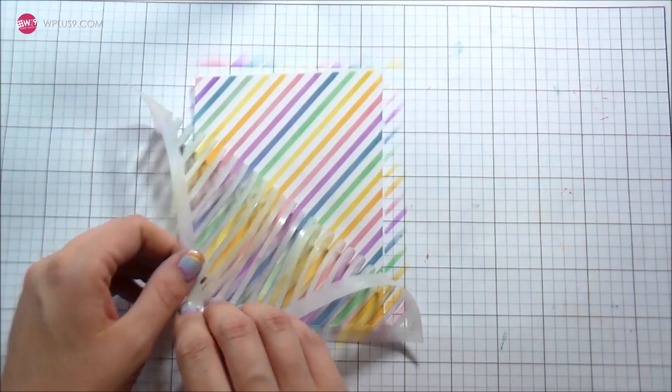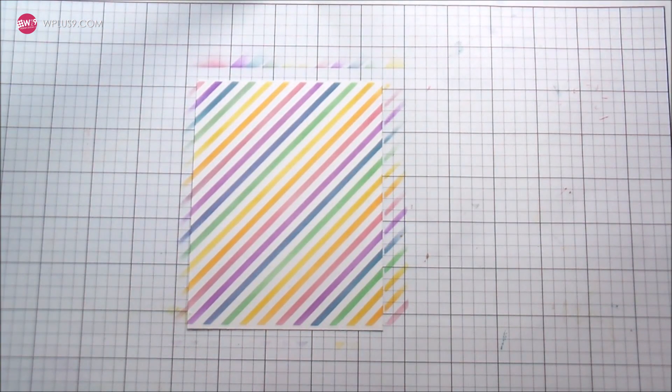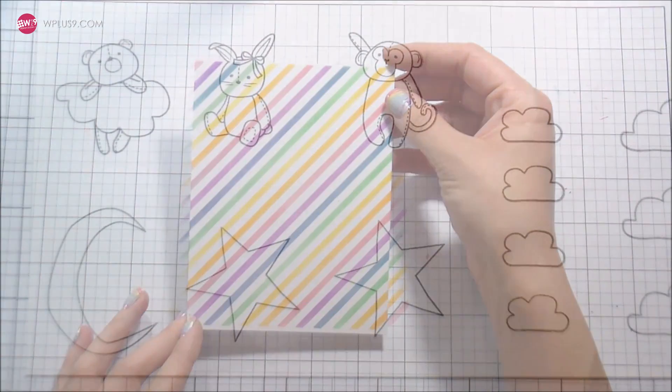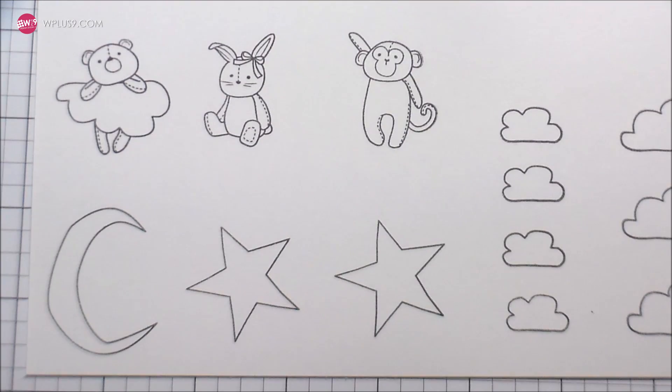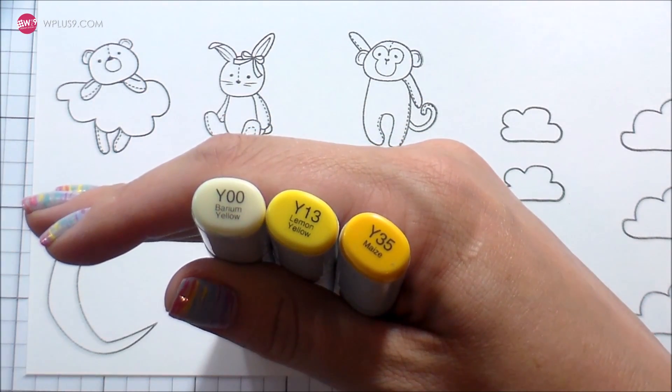I'm gonna remove the stencil and then BAM, rainbow paper. I love the way that it came out. I ended up trimming this down to be slightly smaller than my card front and then I set that aside.